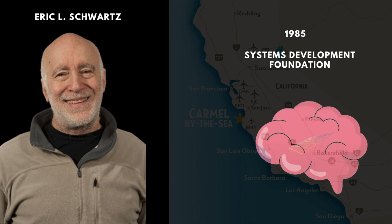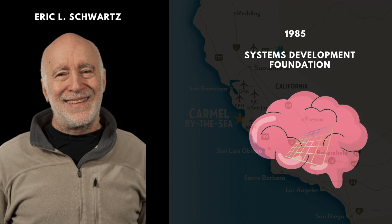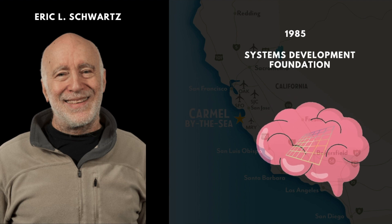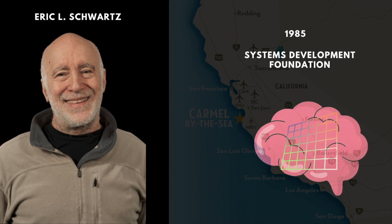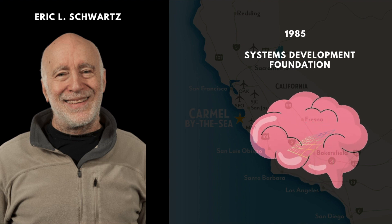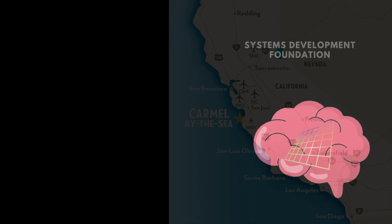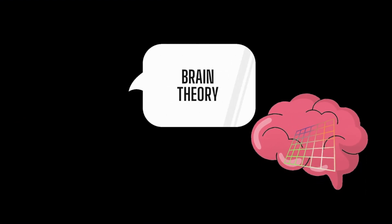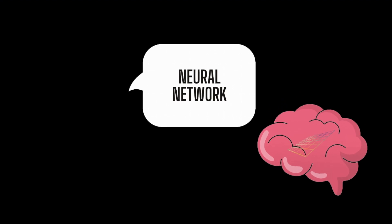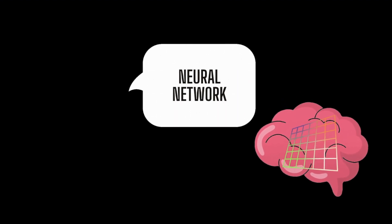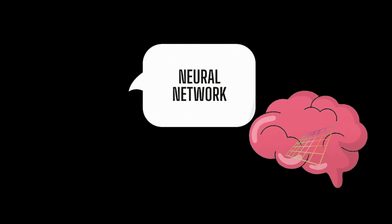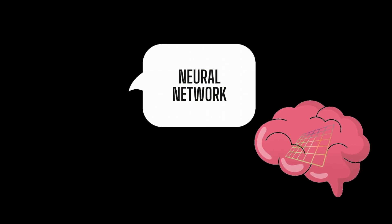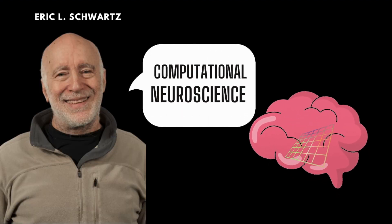In 1985 Eric Schwartz organized a conference in Carmel California at the request of the Systems Development Foundation to provide a summary of the current status of a field which until that point was referred to by a variety of names such as neural modeling, brain theory and neural networks. It was for the first time in this conference that Eric Schwartz introduced the terminology computational neuroscience.